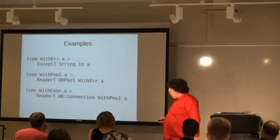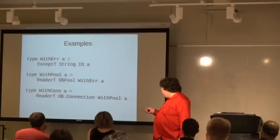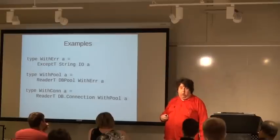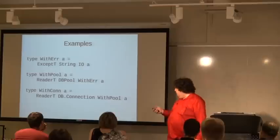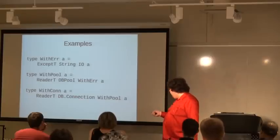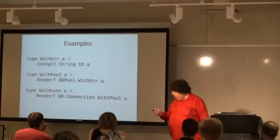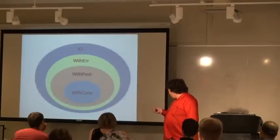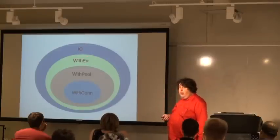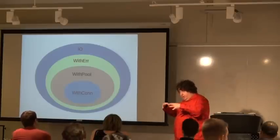We can define WithPool using ReaderT — a Monad transformer that says we have a value we can ask for, literally using a function called ask, to request the database pool. Likewise, WithCon gives us a specific database connection we can ask for. These form the exact same structure as our original domains — one-to-one and onto: the IO Monad, the WithError Monad, WithPool, WithCon, et cetera.